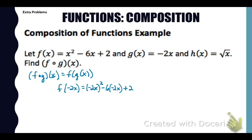So simplifying, if we do the math, we just take negative 2x and square it, negative 6 times negative 2x and then plus 2. That's all we can do to simplify. Notice that h(x) was not used, and sometimes that happens in a problem. You're given extra material that you won't use.